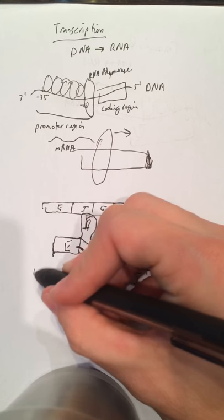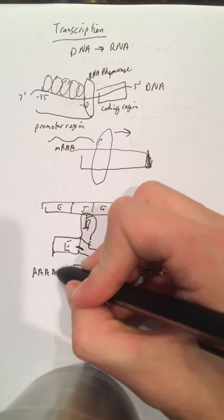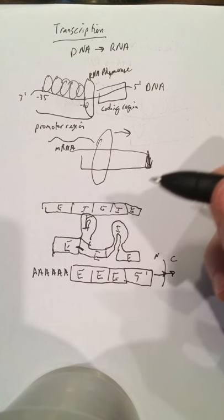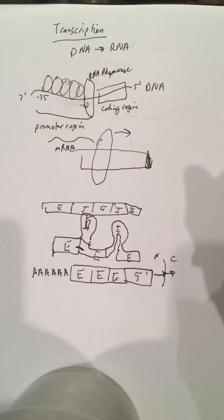And then a poly-A tail is added to the other end. Basically all that does is it protects the mRNA once it's out in the cytoplasm from getting digested by digestive enzymes in the cytoplasm. And that's transcription right there.